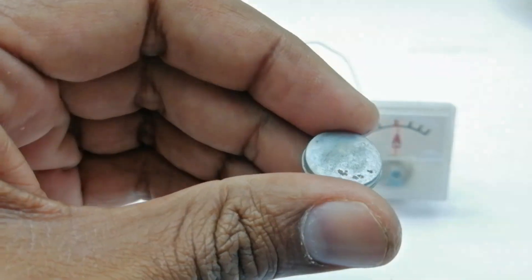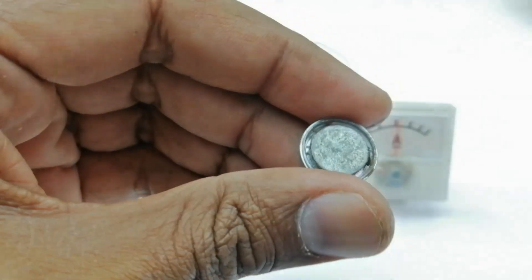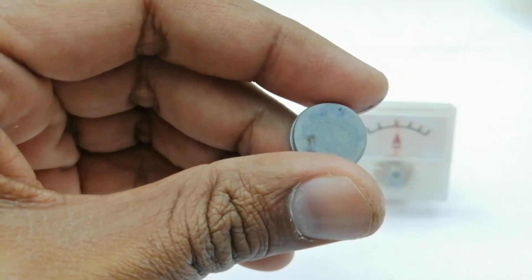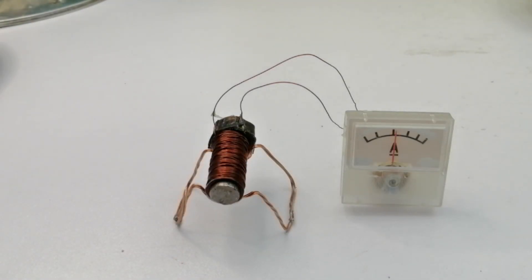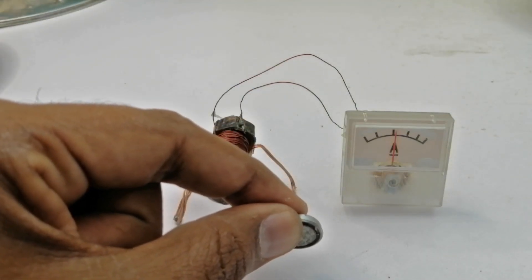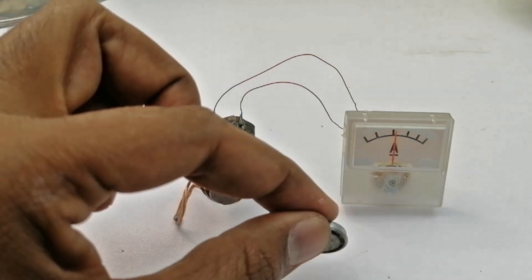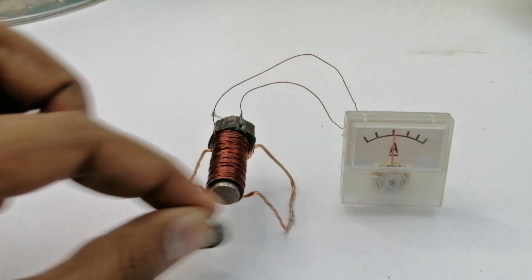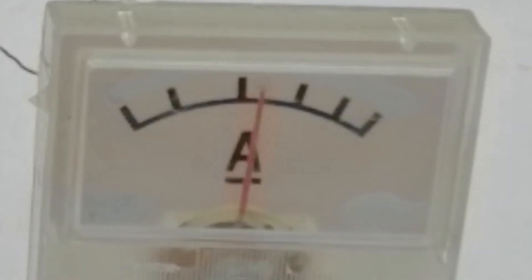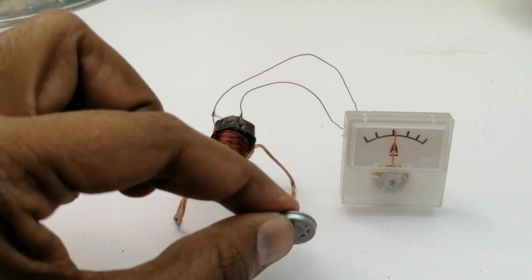We have a permanent magnet. Let's move this permanent magnet fast in front of this coil and see what happens. As we move the magnet in front of the coil, an electric current is generated which moves the needle of the voltmeter forward. Let's see the needle's movement in slow motion. As soon as the magnet moved in front of the coil, the needle of the voltmeter moved forward.